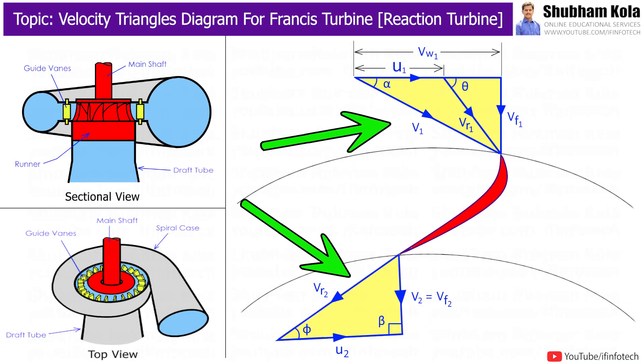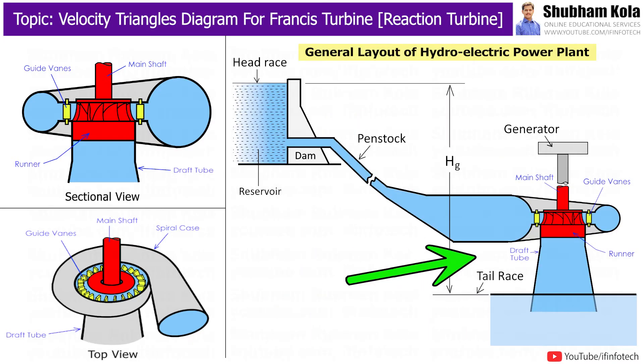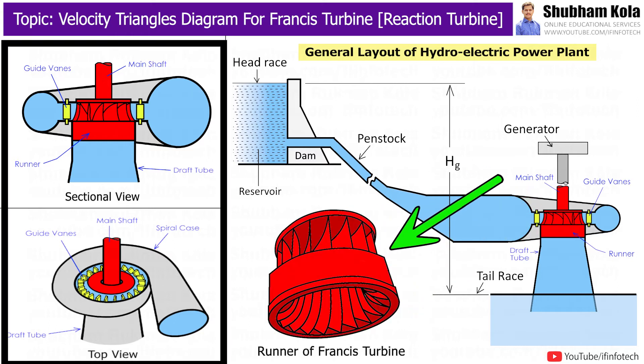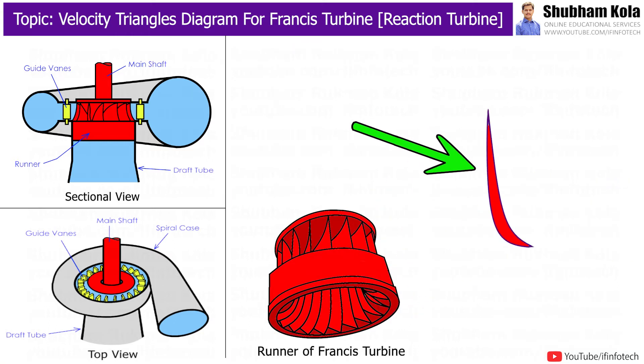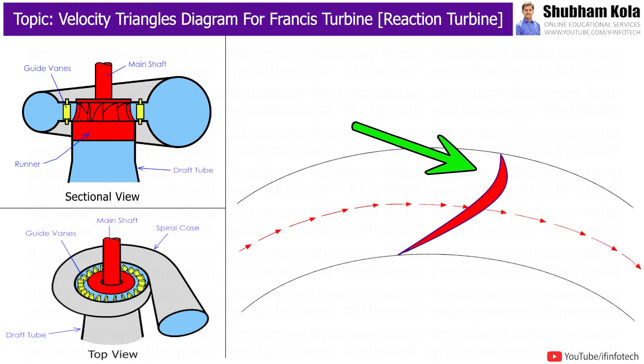To draw a velocity diagram of an inward radial flow reaction turbine, i.e. Francis turbine, I will consider only one blade which is moving with velocity u.